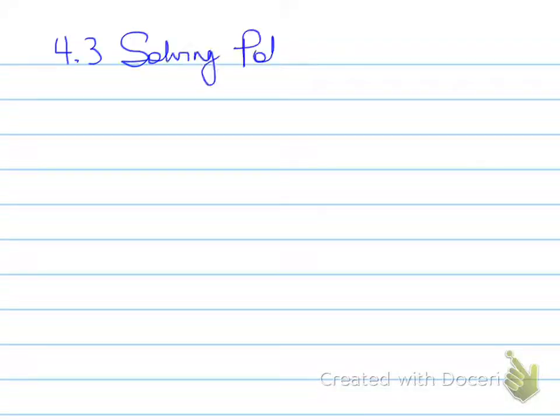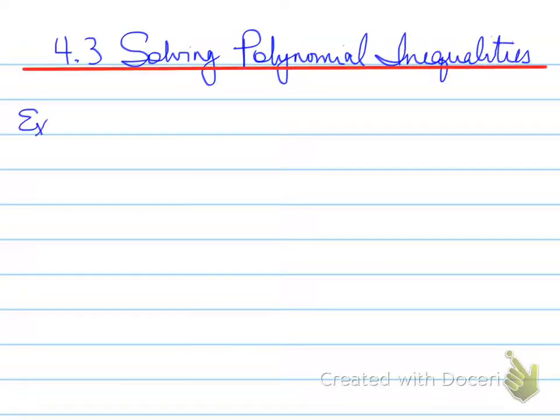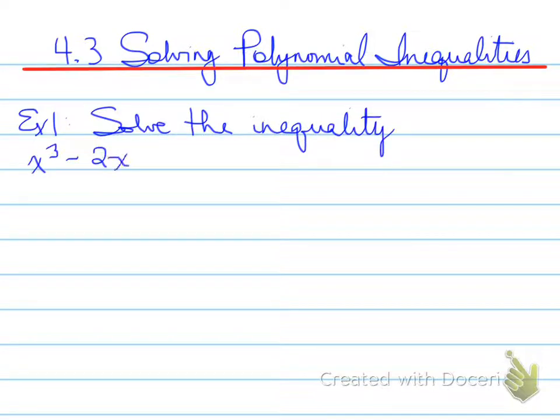All right, 4.3, solving polynomial inequalities. Example 1, solve the inequality x cubed minus 2x squared plus 5x plus 20 is less than or equal to 2x squared plus 14x minus 16.